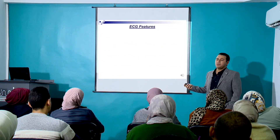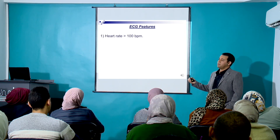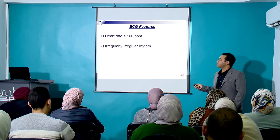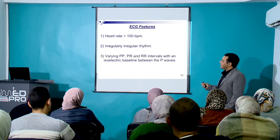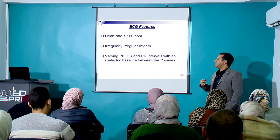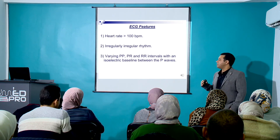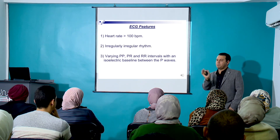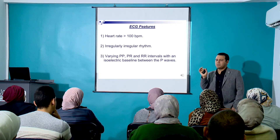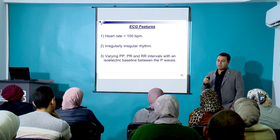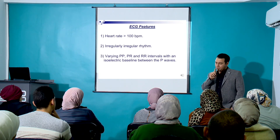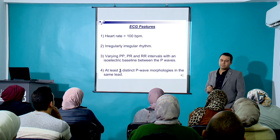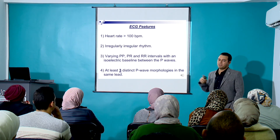What will the ECG show? Tachycardia — the T in MAT stands for tachycardia, so heart rate would be above 100. Irregularly irregular rhythm. Variable PP interval, PR interval, and RR interval with an isoelectric baseline between the P waves — so everything will be variable. But the most important feature is that you should be able to count more than three different shapes of P waves in the same lead. If you cannot do this, then probably it's not MAT.